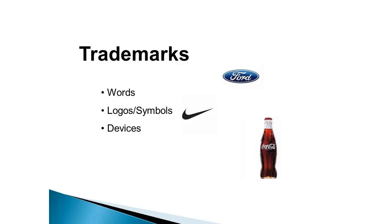Trademarks can also be logos or symbols — like the Ford logo or the Nike swoosh. The shape of something can also be trademarked. The classic Coke bottle shape — wide at the bottom, narrowing in the middle, then widening before the neck — is trademarked by Coca-Cola, so no other company can put their product in a bottle with that shape. Interestingly, Owens Corning, the Toledo-based insulation company, has a trademark on pink insulation, meaning they're the only company that can manufacture it. All these trademarks are used to identify products and differentiate them from competitors.